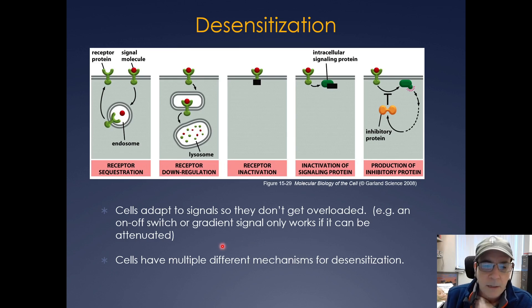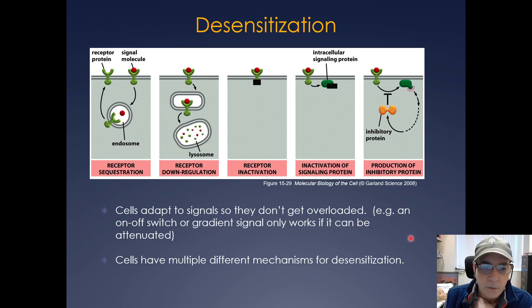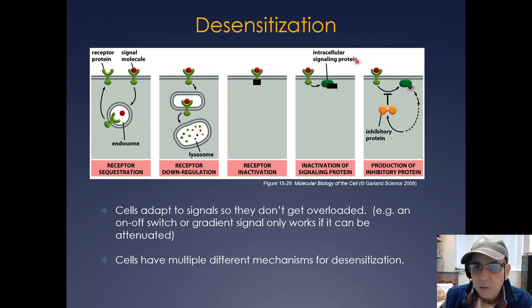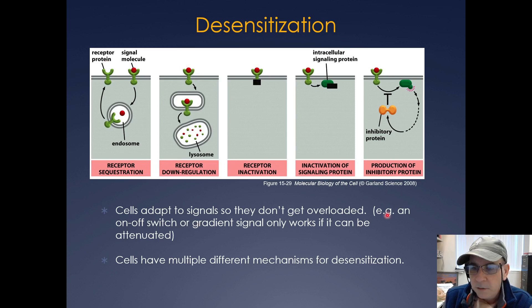All of these desensitization mechanisms allow cells to adapt to signals and not get overloaded. Think of it as an on-off switch so the signal can be attenuated — not only through removal of the signaling molecule, but through all these additional processes.